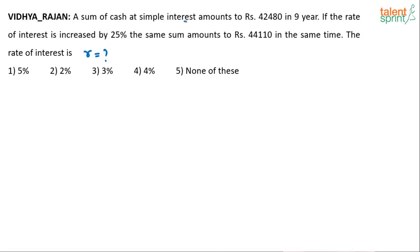This is a case of simple interest. It says a sum of cash, meaning a principal amount which let's assume as P, at simple interest amounts to - now what do you mean by amounts to? The total amount. So this 42,480 here is the total amount. It is not the simple interest, it is total amount meaning interest plus the principal, and the time period is 9 years.